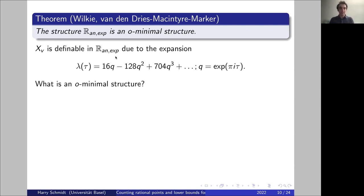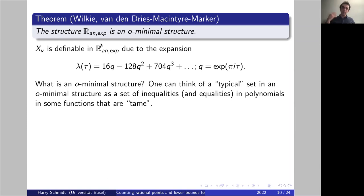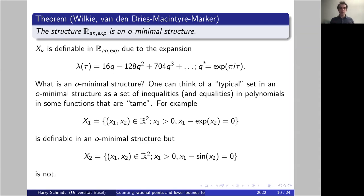What is ℝ_an,exp? You take the real numbers, all polynomials over the reals, but also adjoin finitely many analytic functions defined on some compact subset of ℝ — power series in several variables on some compact — and the exponential function, which is unbounded. Lambda restricted to a fundamental domain is an analytic function of q = e^{2πiτ}, which is essentially the exponential function over the reals, so Lambda lies in this structure. This was established by Wilkie, and extended by Vanden Dries, McIntyre, and Marker.